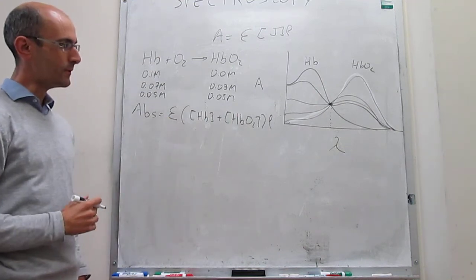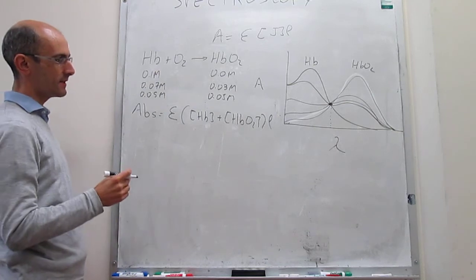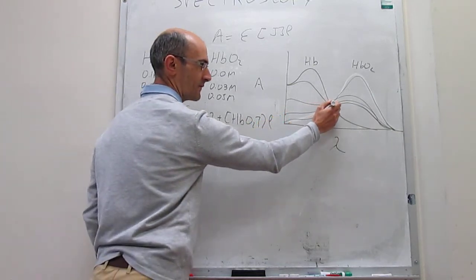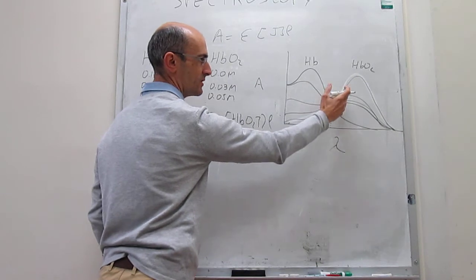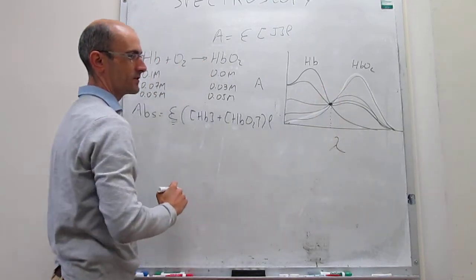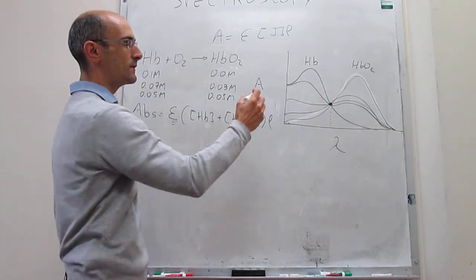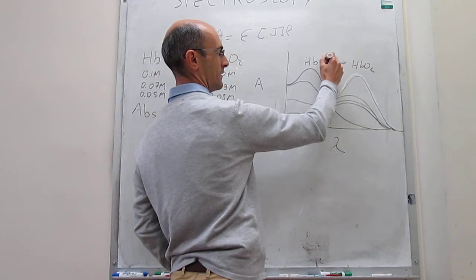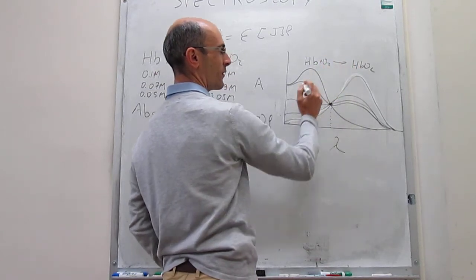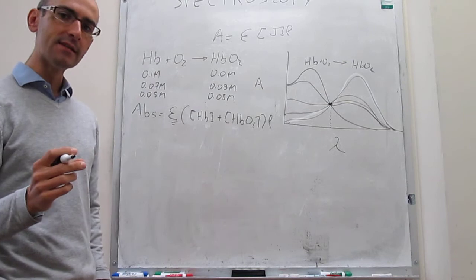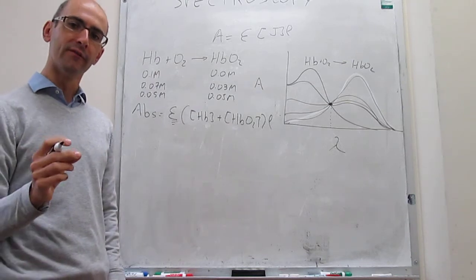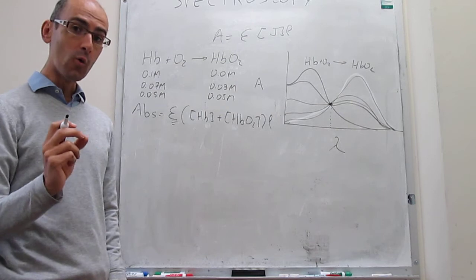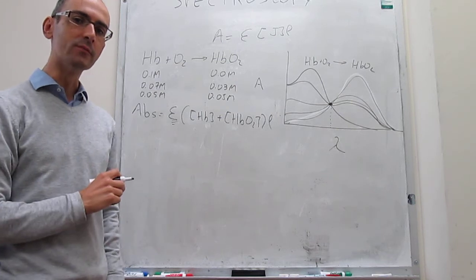Why is this important? The presence of an isosbestic point — a point at which the absorbance doesn't change as a function of time — tells you that these two species are actually directly related. That is the important thing: they are directly related. The mechanism directly converts hemoglobin into oxyhemoglobin without an intermediate step.